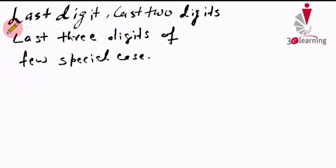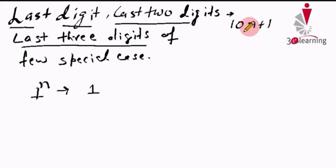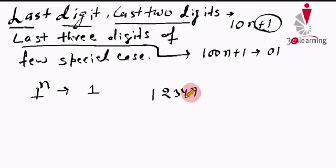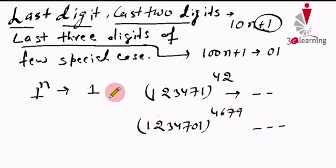The first rule: 1 raised to power n always ends with 1. For the last two digits, we check numbers in the form 10n+1 (numbers ending with 1). For the last three digits, we check numbers in the form 100n+1 (numbers ending with 01). For example: what are the last two digits of 123471^42, or the last three digits of 1234701^4679?